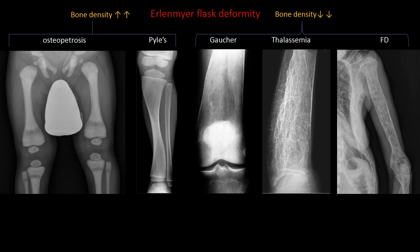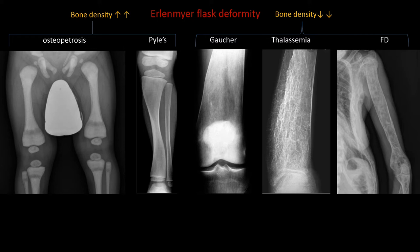This is an antimony case featuring Erlenmeyer flask deformity, which is simply metaphyseal flaring or metaphyseal widening. We will see how to approach it in a viva exam. We can narrow the differential diagnosis of metaphyseal flaring first by bone density, then by other characteristic features of each condition.